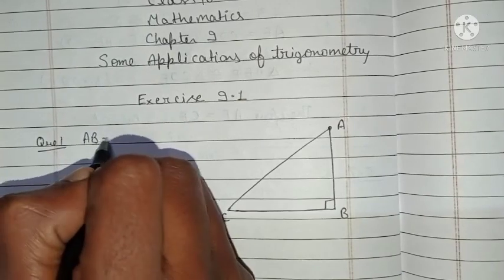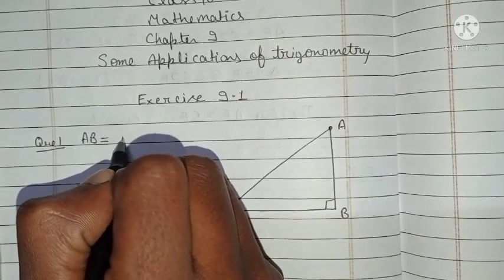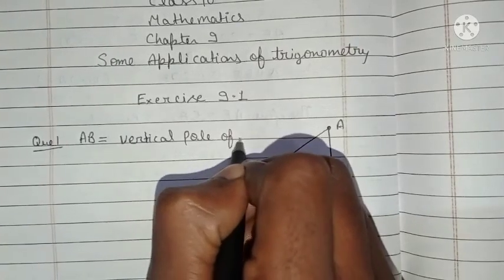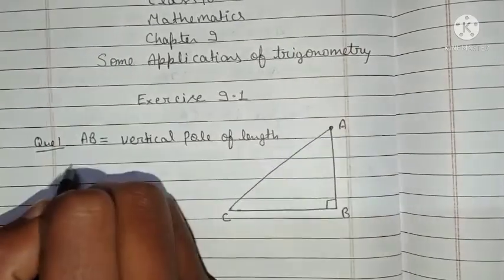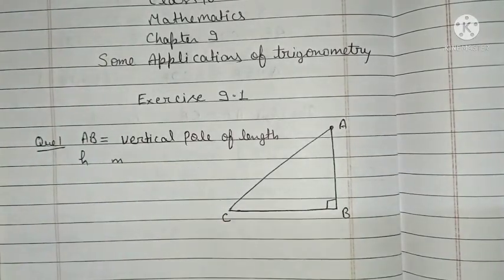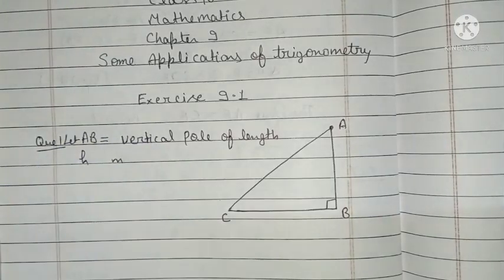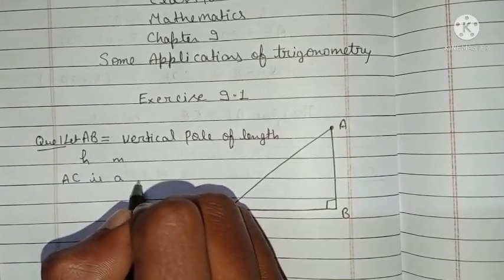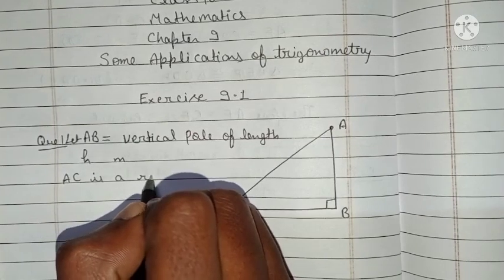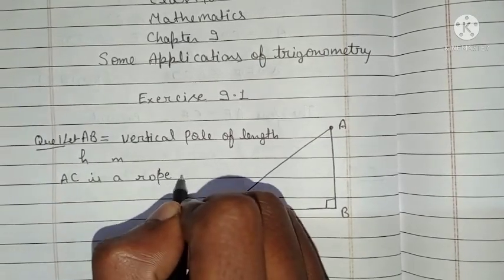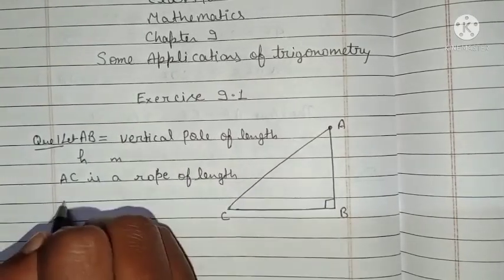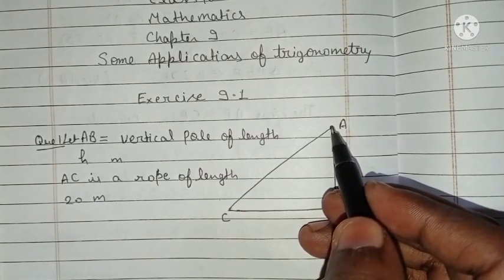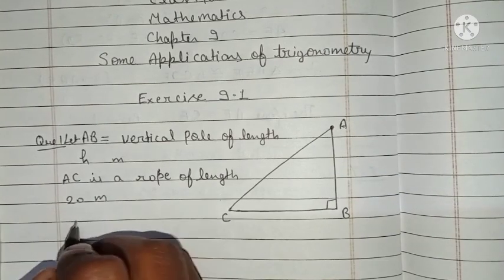Let AB be a vertical pole of length h meters. AC is a rope of length 20 meters, which is tightly stretched to the top of the vertical pole. The angle of elevation, angle ACB, is equal to 30 degrees.